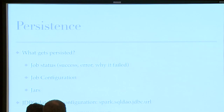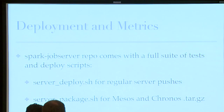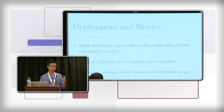Using it in production: as Kelvin mentioned, we persist job status and the job configuration, so you can easily look back — if something failed, you can say, how did I configure this job? What caused it to fail? We also persist the jar so you can easily run the same things again. All of that is persisted to a database. You can choose whatever database you like by specifying the database URL, and you can even share the database across multiple instances of a job server for high availability purposes. It defaults to H2. The project also includes full deploy scripts as well as monitoring and metrics routes.